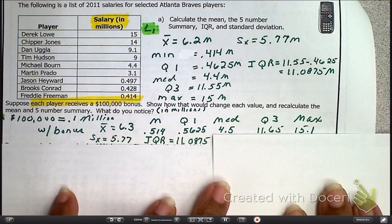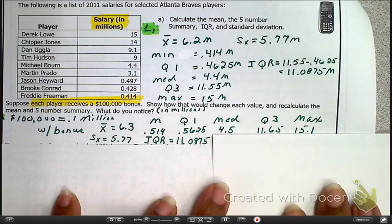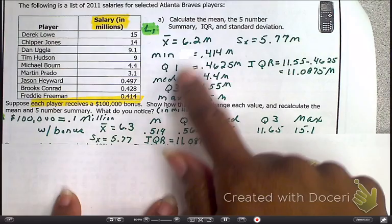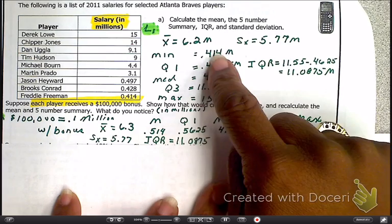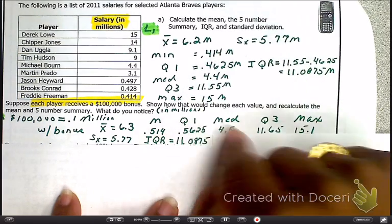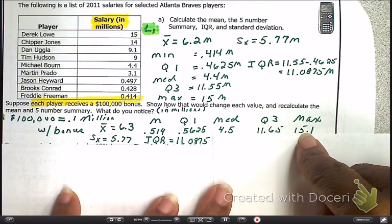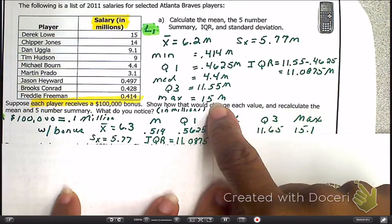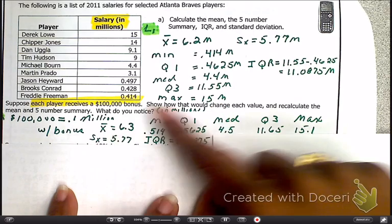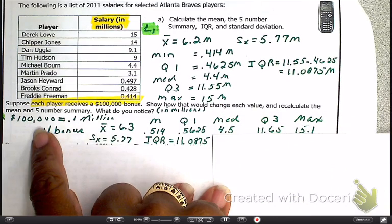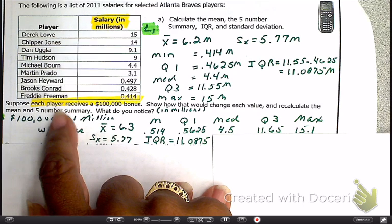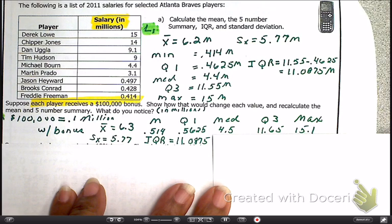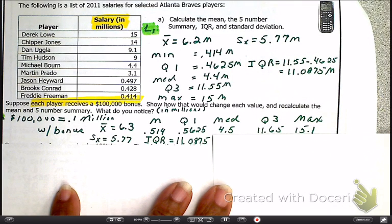Now, here are the values you have. And then they said, what do you notice? Well, compare that 6.3 to that 6.2. Compare that 0.514 to that 0.414. Let's look at something else. Let's look at that maximum value compared to that maximum value. I'm seeing that everything seemed to increase by 100,000, which is equivalent to 0.1, when each player got a bonus. But wait for it. It also looks as if the standard deviation does not change.